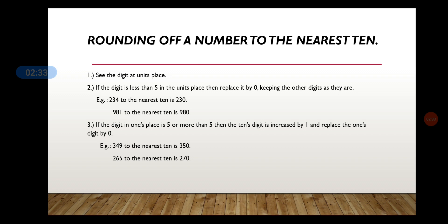Second point: if the digit is less than 5 in the units place, then replace it by 0, keeping the other digits as they are. Consider the number 234. The digit in the units place is 4. Since 4 is less than 5, when you round off, you get the answer as 230. This 4 will be replaced by 0. So 234 when rounded off to the nearest tens gives you 230. Similarly, 981 when rounded off to the nearest tens gives the answer as 980.